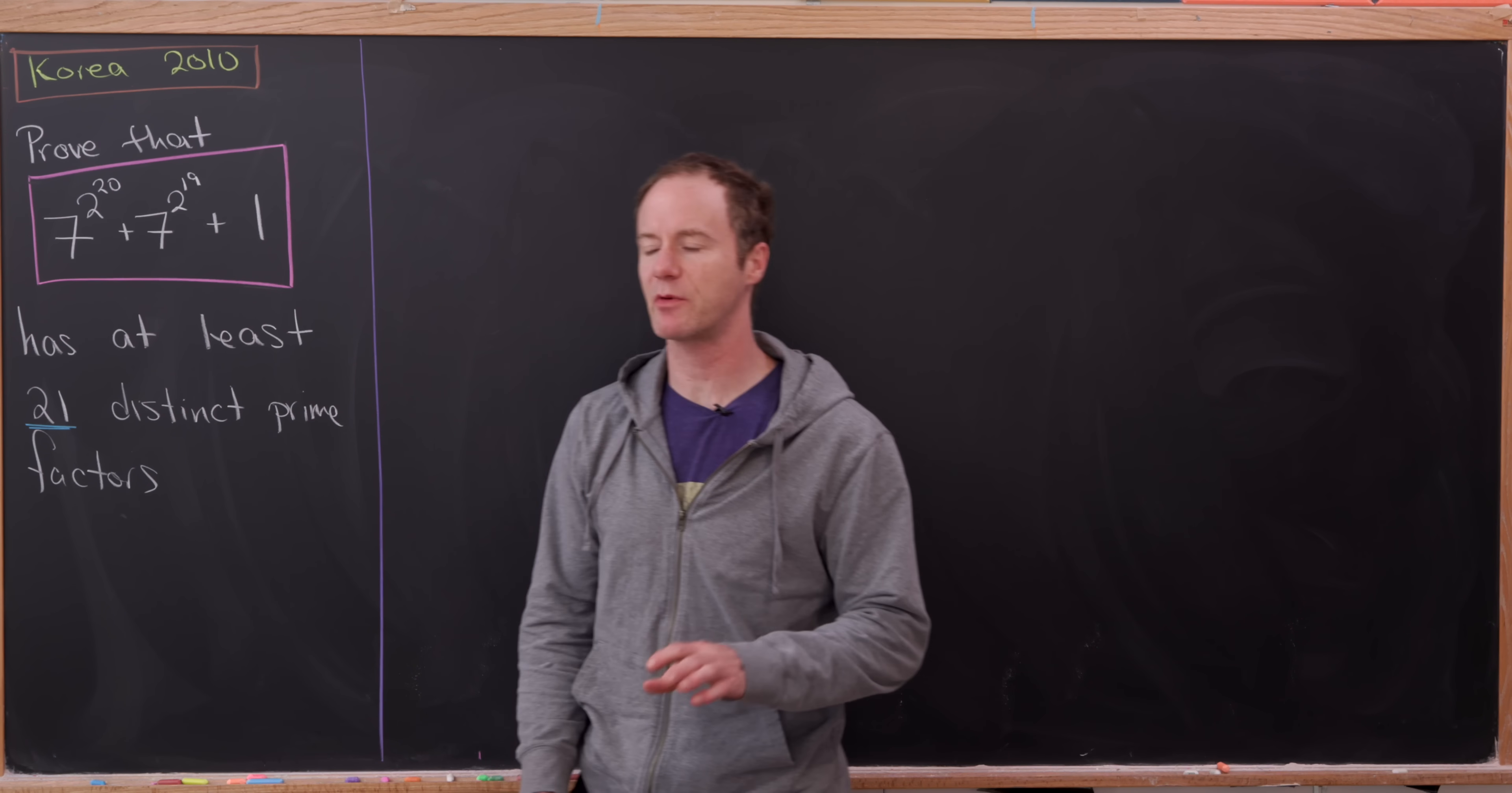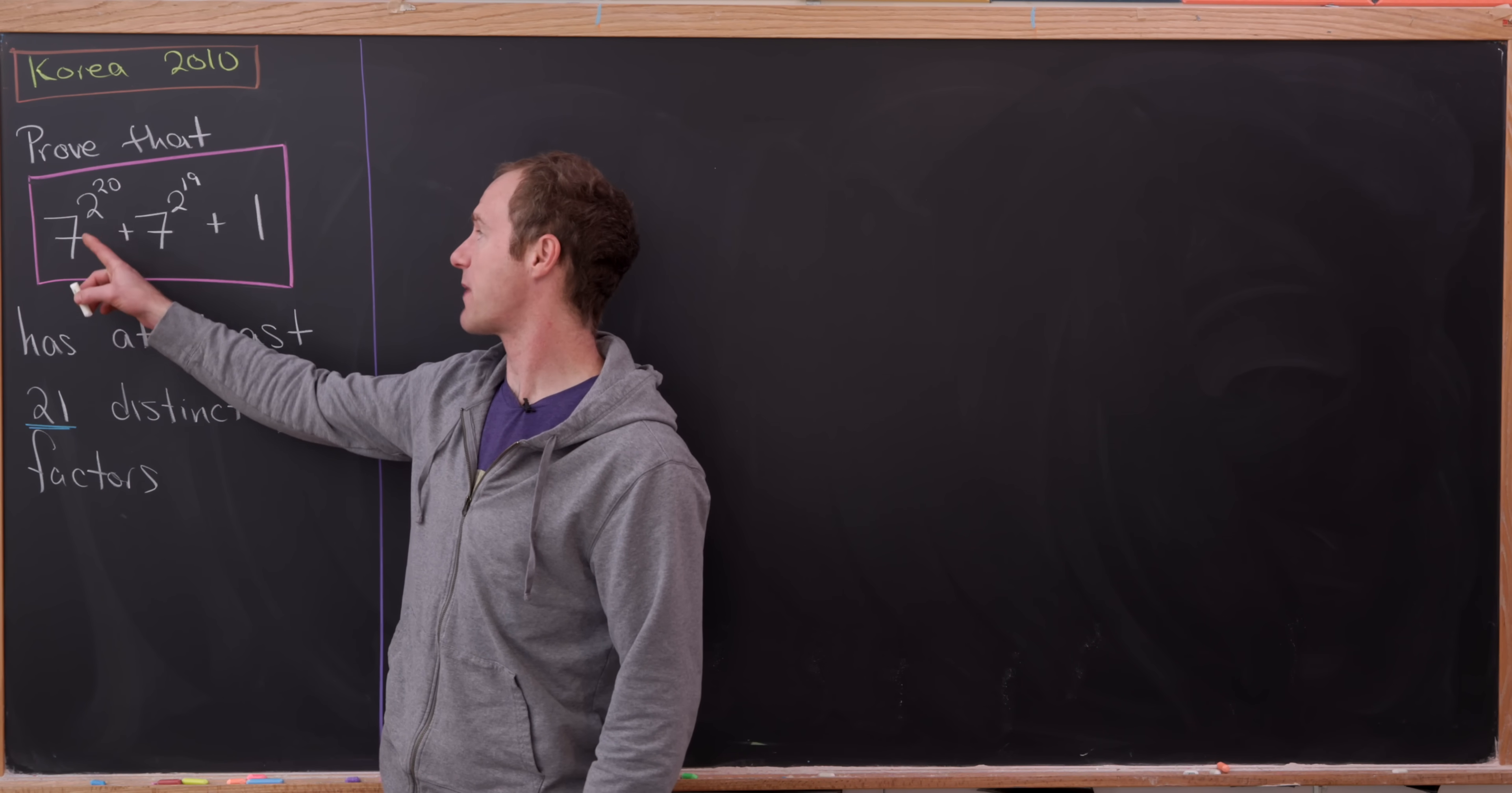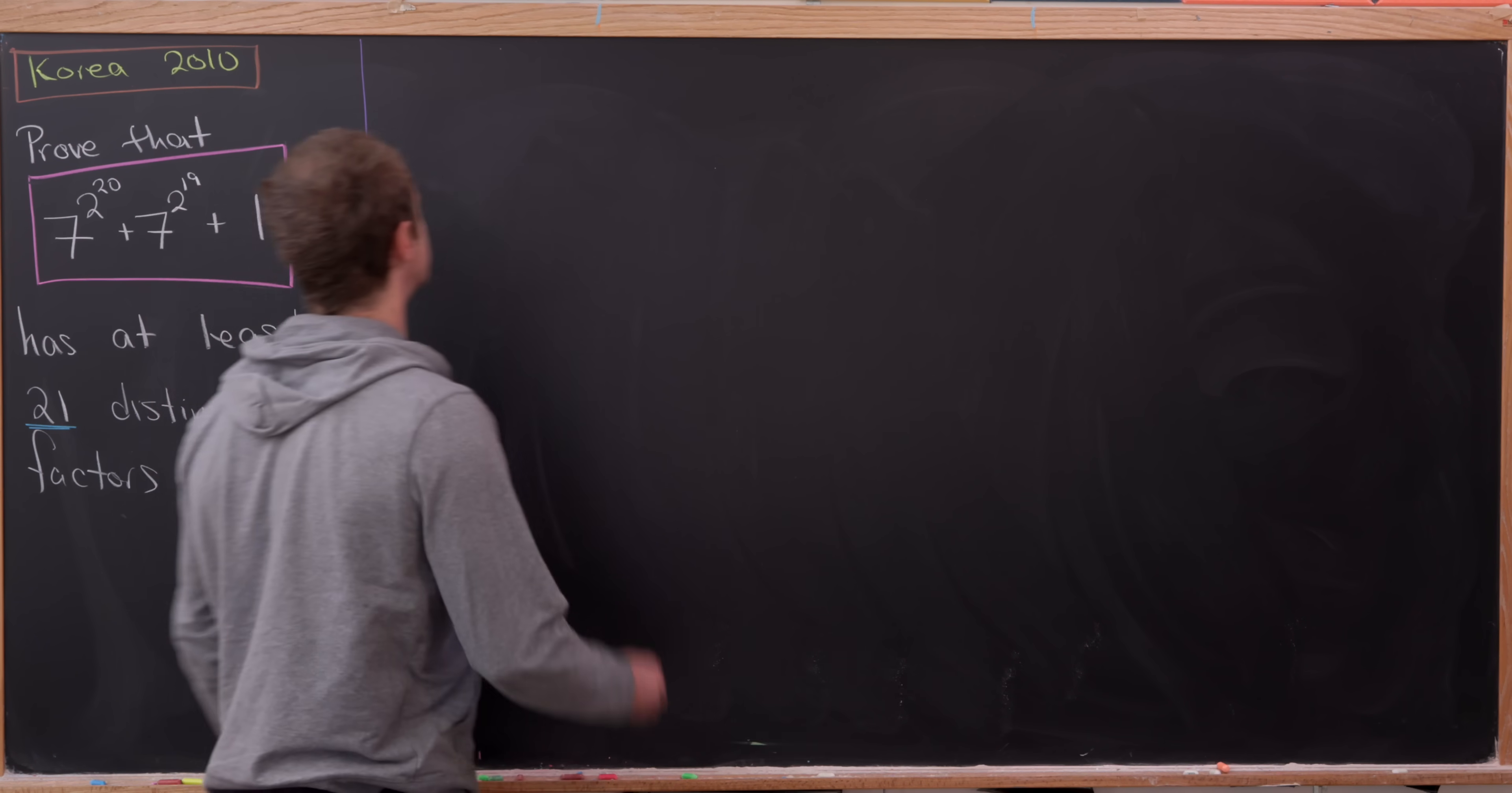Today we're going to look at a pretty interesting problem involving the prime factorization of an astronomically large number. This comes from a Korean math contest. So let's see our goal. We'd like to prove that 7 to the power 2 to the 20 plus 7 to the power 2 to the 19 plus 1 has at least 21 distinct prime factors. So let's jump into it.